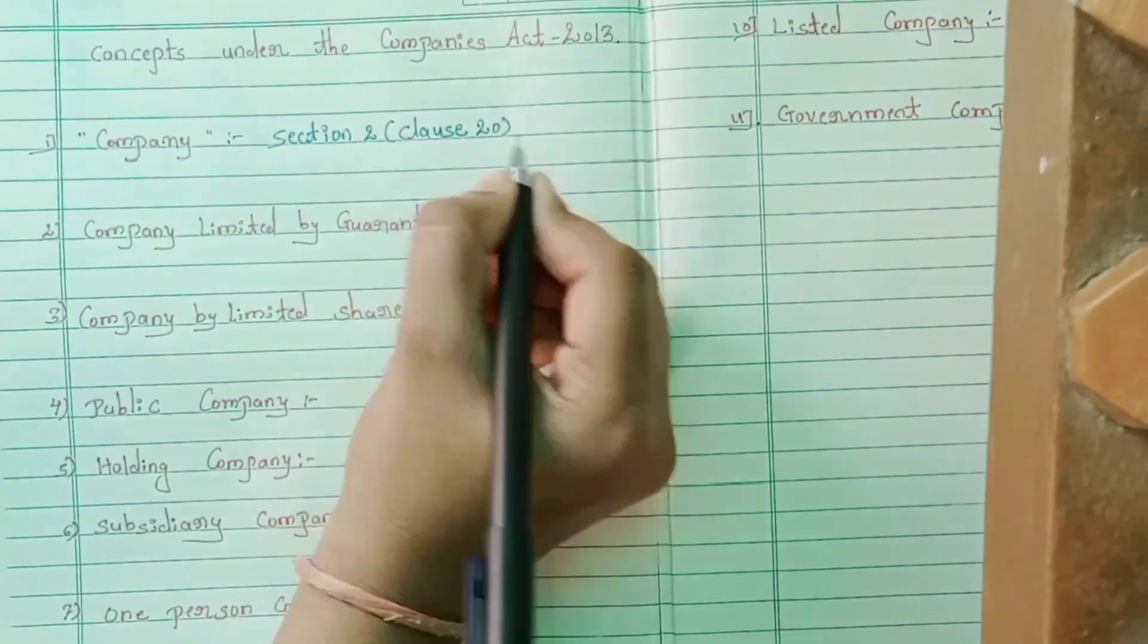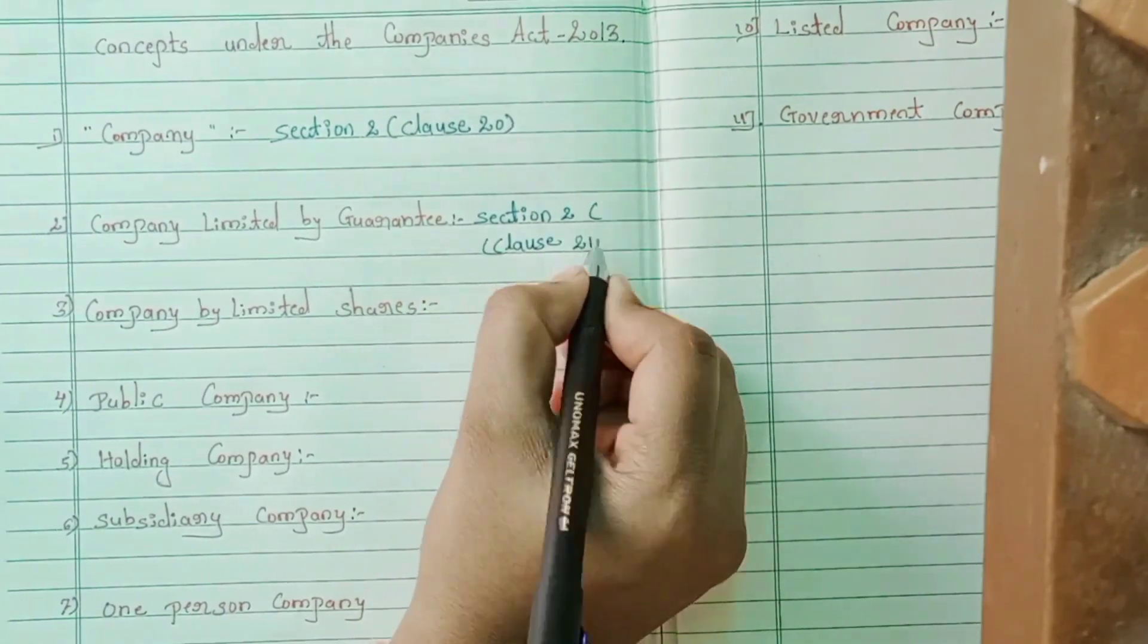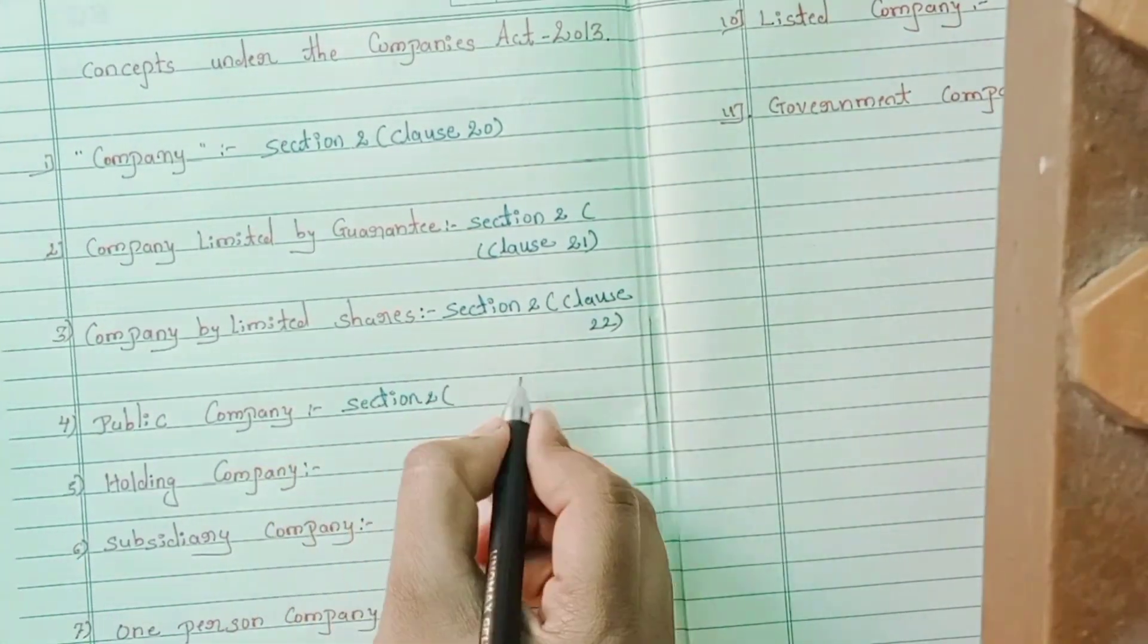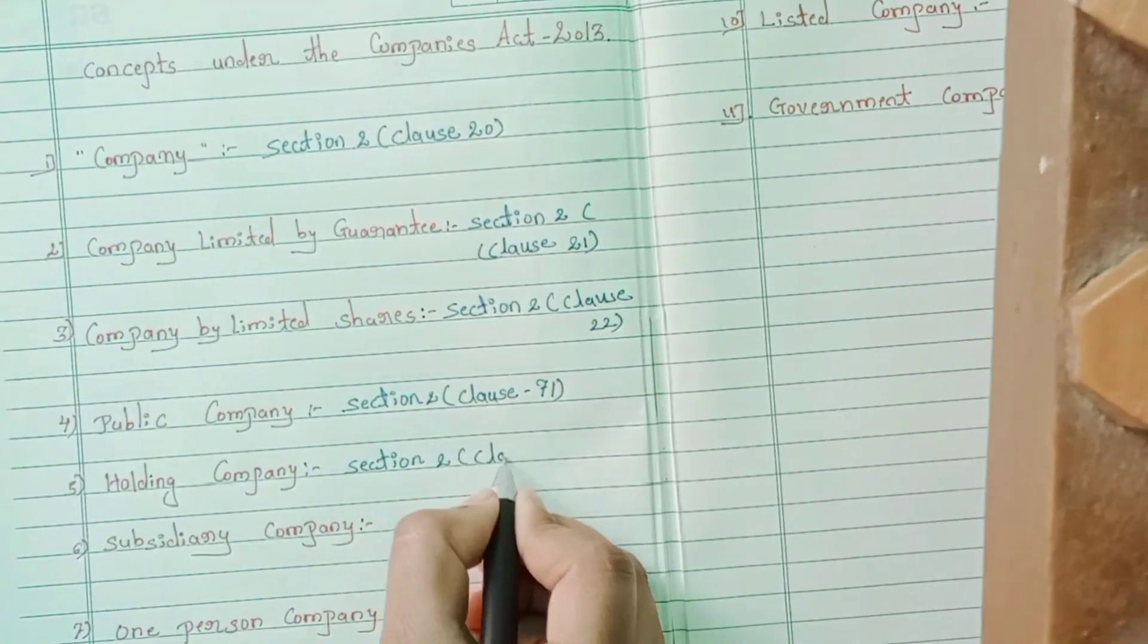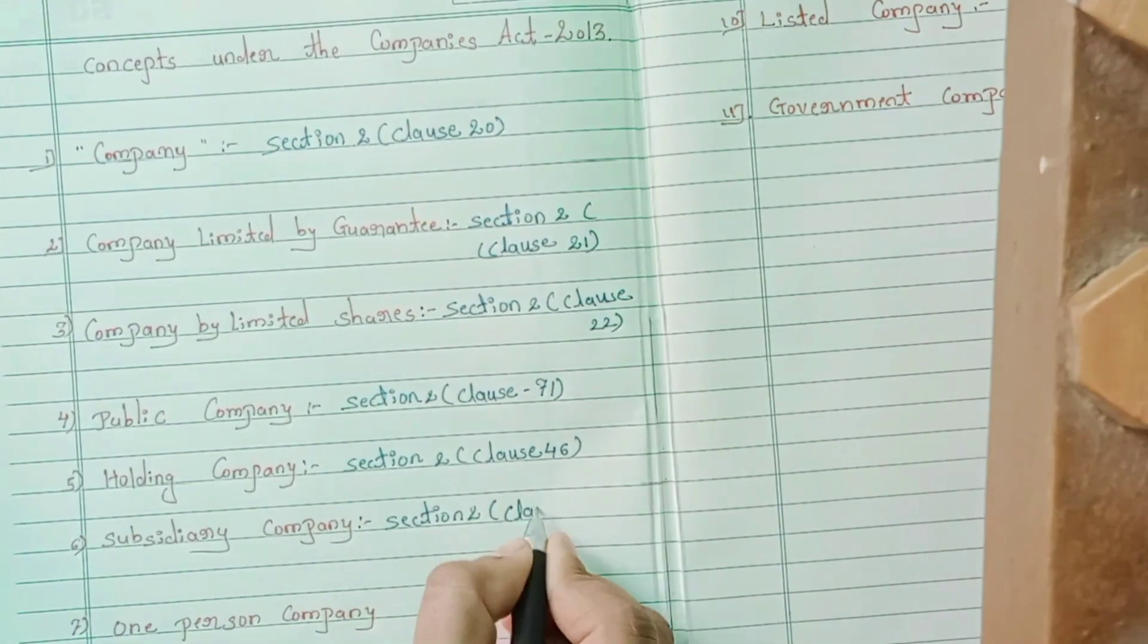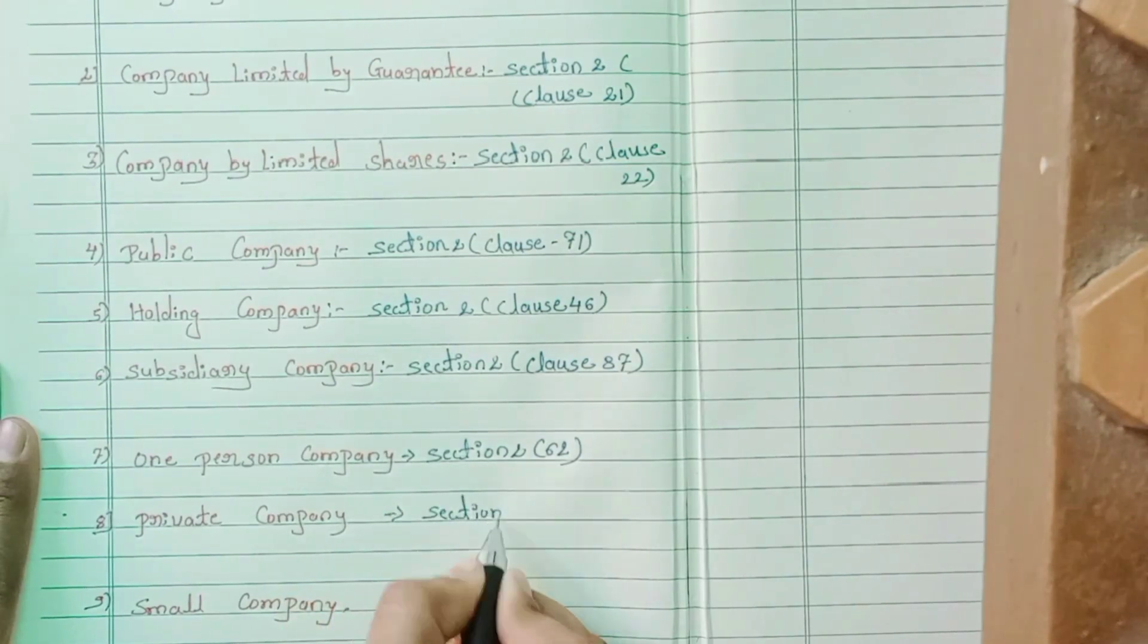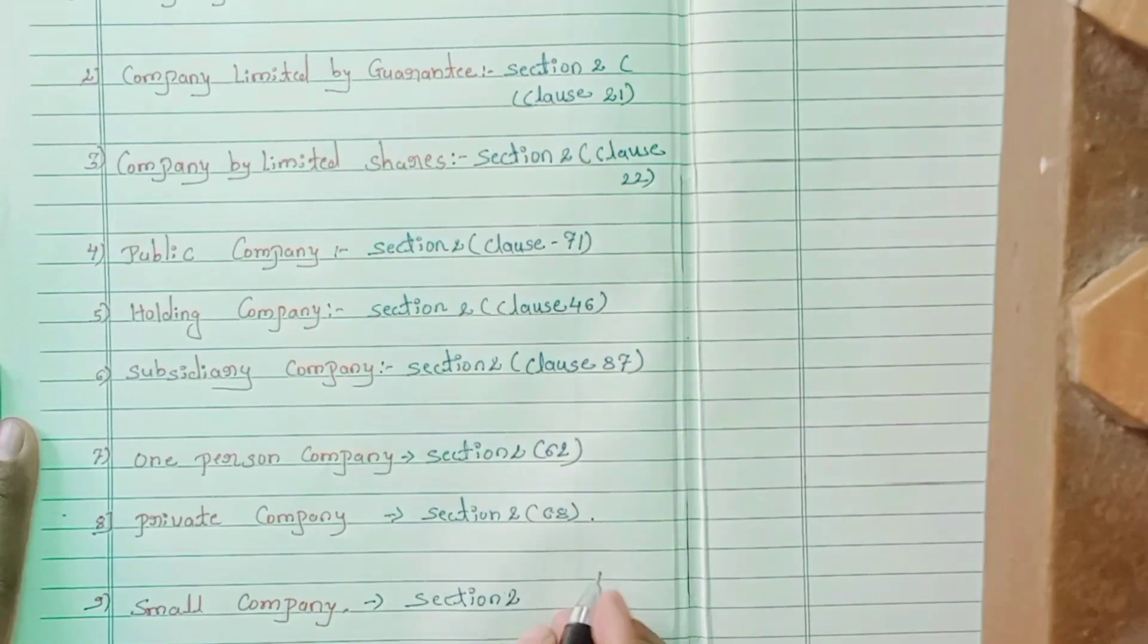Concepts under the Companies Act 2013. First, Company Section 2 Clause 20. Company Limited by Guarantee Section 2 Clause 21. Company Limited by Shares Section 2 Clause 22. Public Company Section 2 Clause 71. Holding Company Section 2 Clause 46. Subsidiary Company Section 2 Clause 87. One-person Company Section 2 Subsection 62. Private Company Section 2 Subsection 62. Small Company.